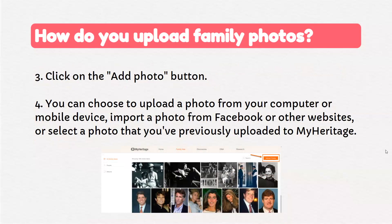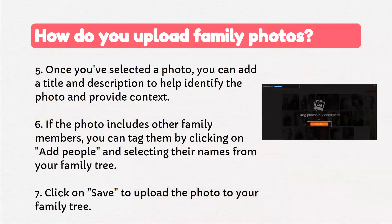Click on the 'Add Photo' button and choose to upload a photo from your computer or mobile device. You can also import from Facebook or other websites, or select a photo previously uploaded to MyHeritage. Once you've selected a photo, you can add a title and description to help identify it. If the photo includes other family members, you can tag them by clicking 'Add People' and selecting their names from your family tree. Then click Save to upload the photo.